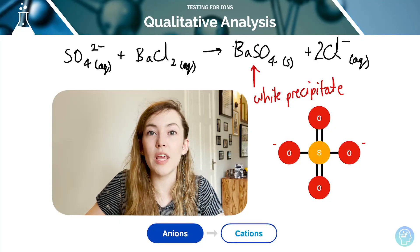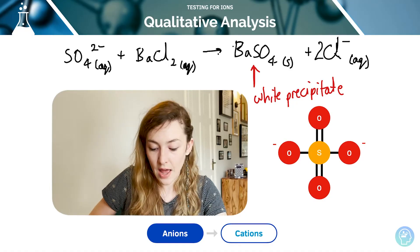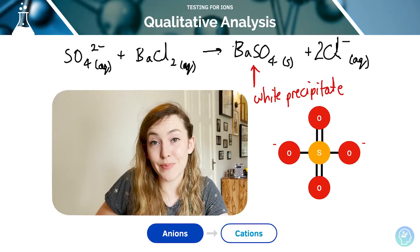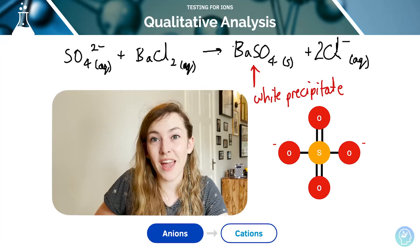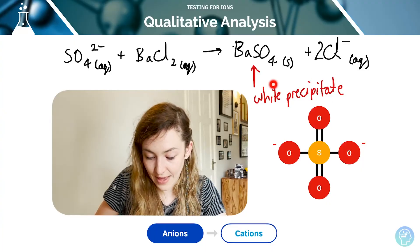You must remember with these tests, it is only a positive test result when it is the exact answer that you're expecting, a white precipitate. If it's a yellow precipitate, if it's anything else, we do not call that a positive test result. It can only be this.